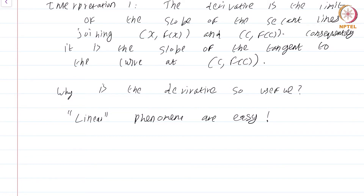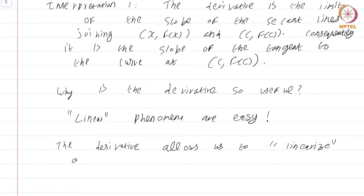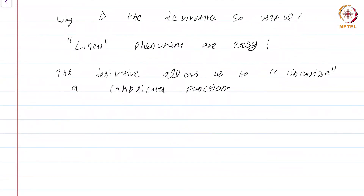Linear phenomena are easy. The derivative allows us to linearize a complicated function. In fact, when you study derivatives in higher dimensions, many authors call the derivative the linearization. What do I mean? Let us look back at the definition: the limit as x goes to c of f(x) minus f(c) divided by x minus c equals f prime of c — which is just a real number.